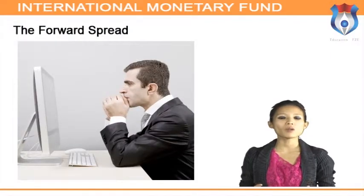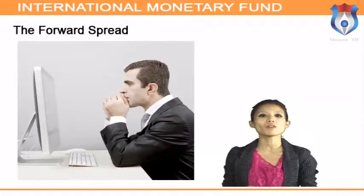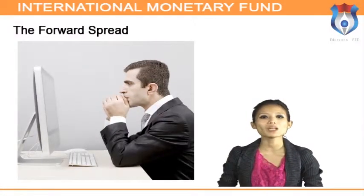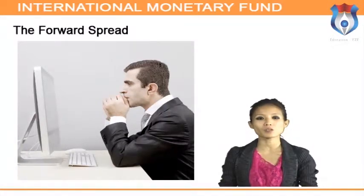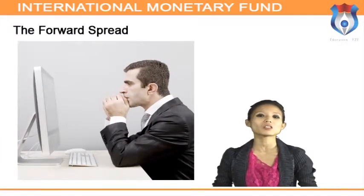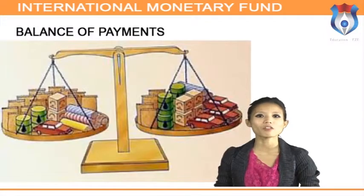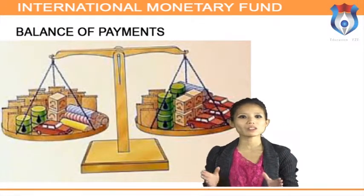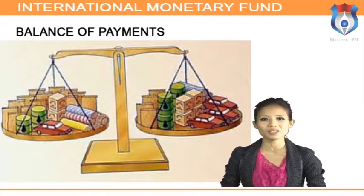The forward spread, also called the forward margin, the spot-forward spread, or the forward pickup, is the difference between the forward rate and the spot rate, calculated as a percentage of the latter. A country's balance of payments is commonly defined as a record of transactions between its residents and foreign residents over a specified period, with each transaction recorded in accordance with the principles of double-entry bookkeeping.